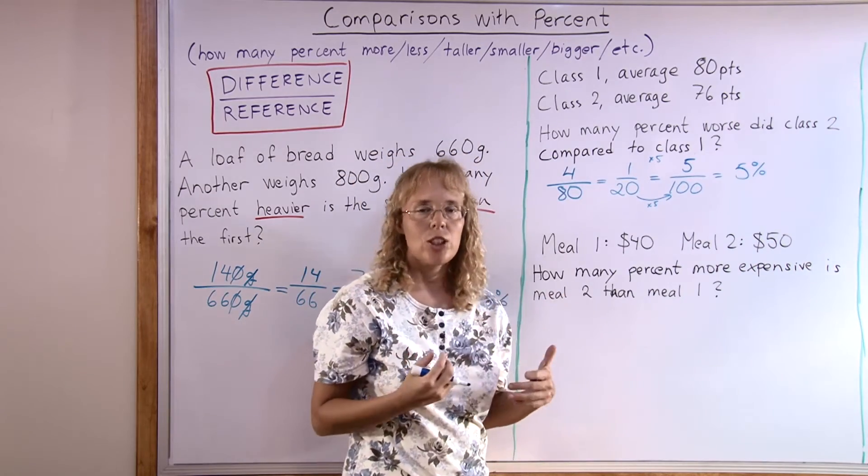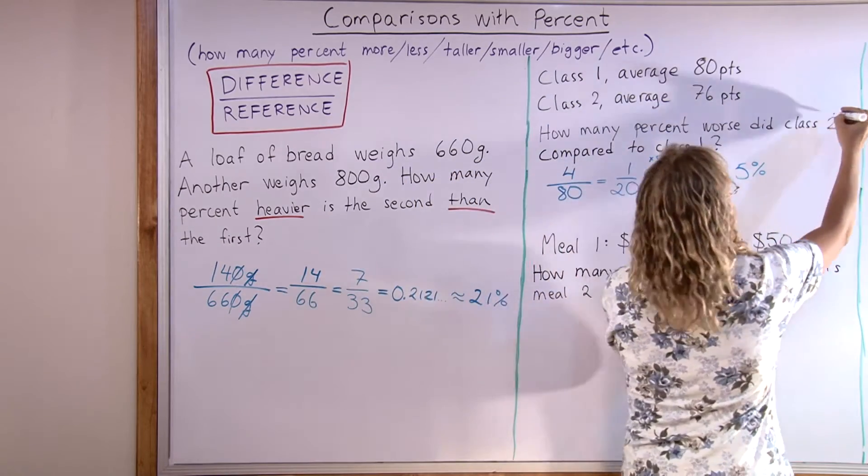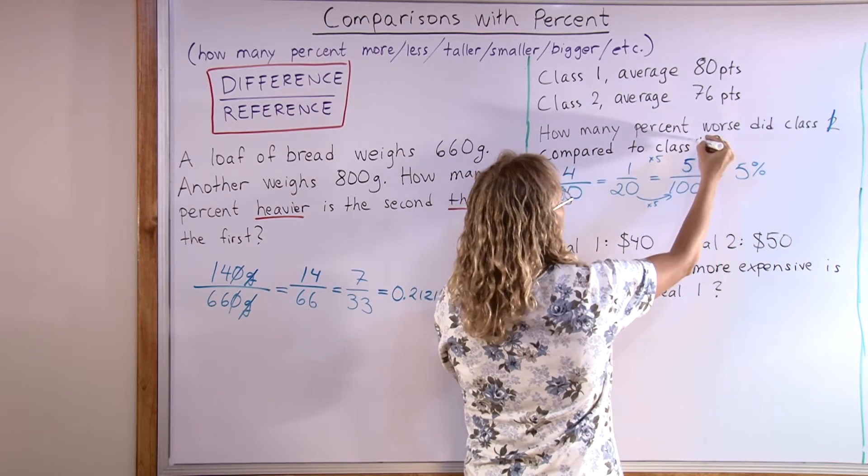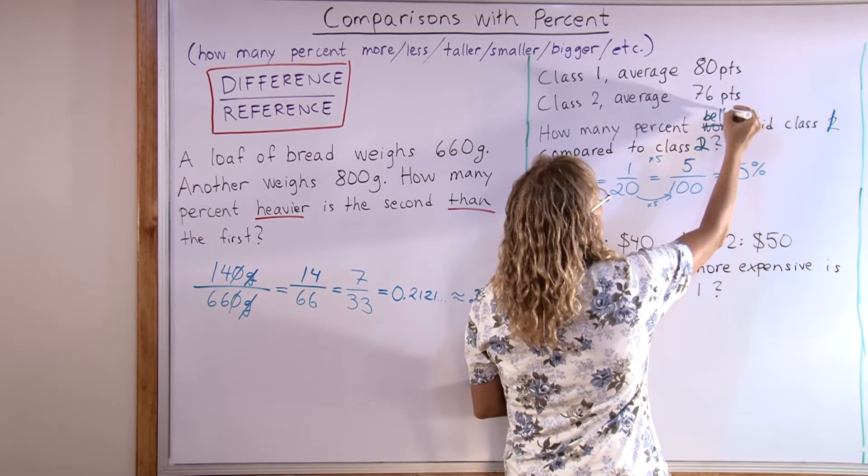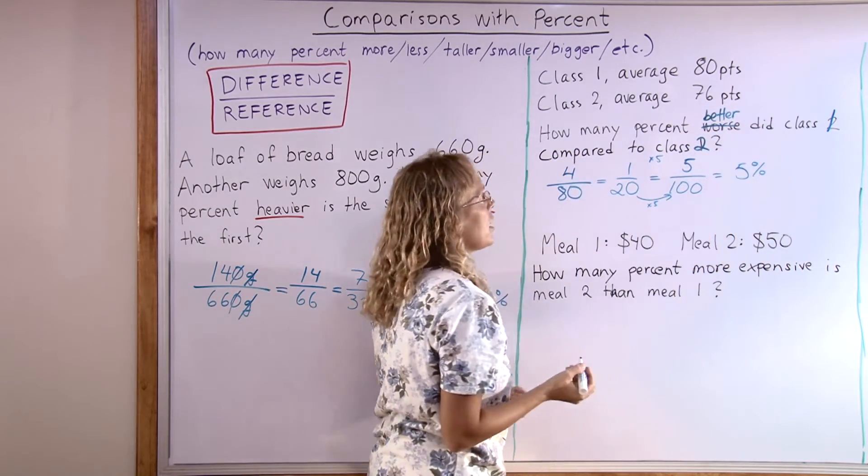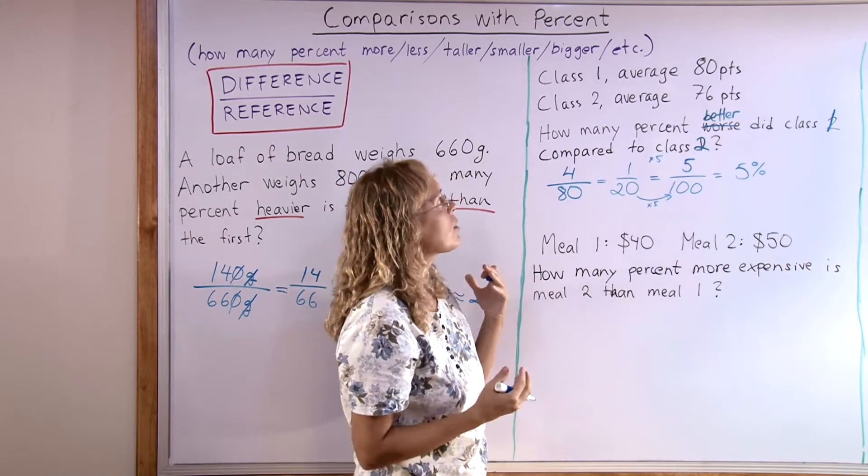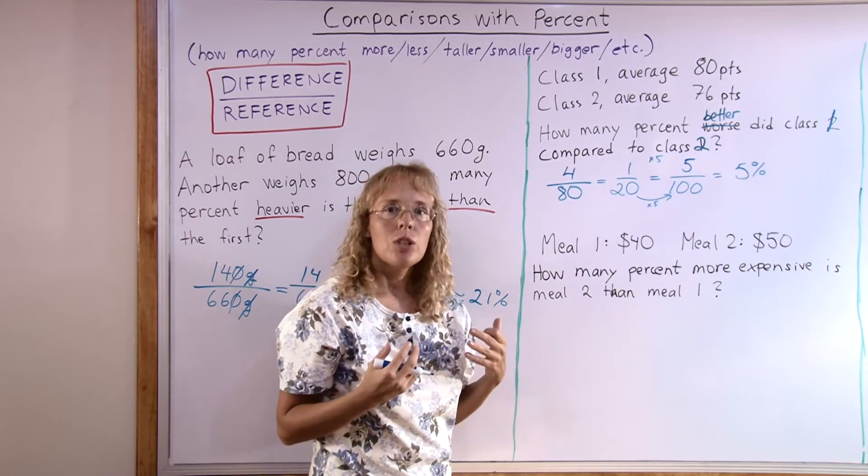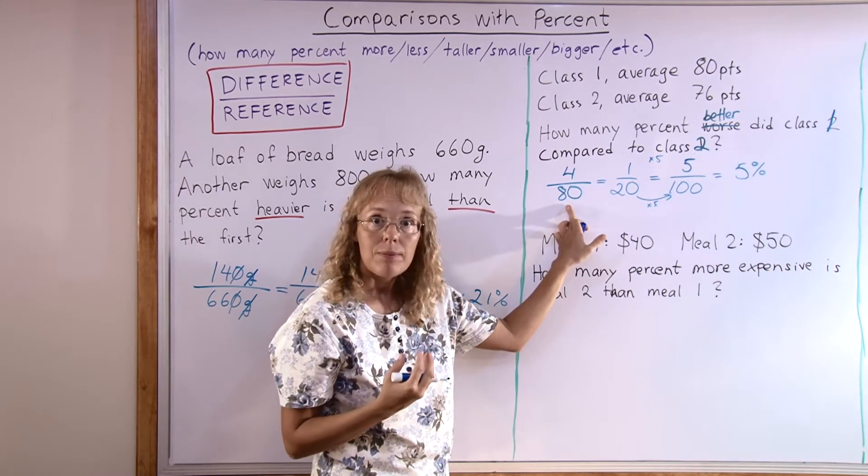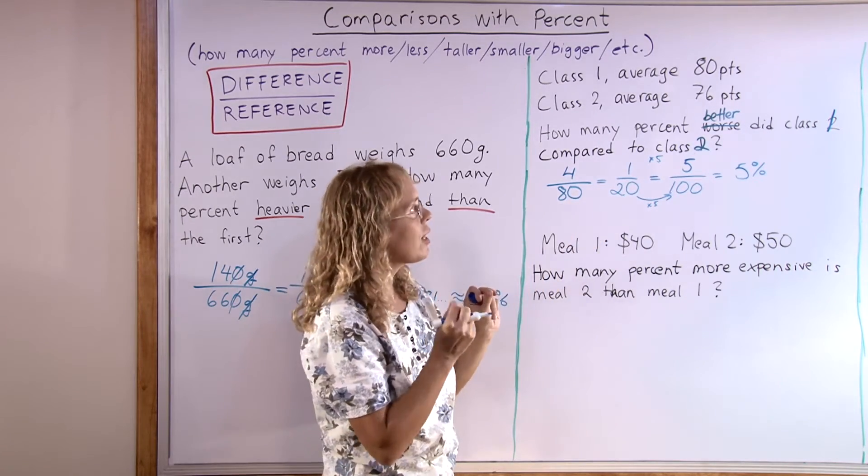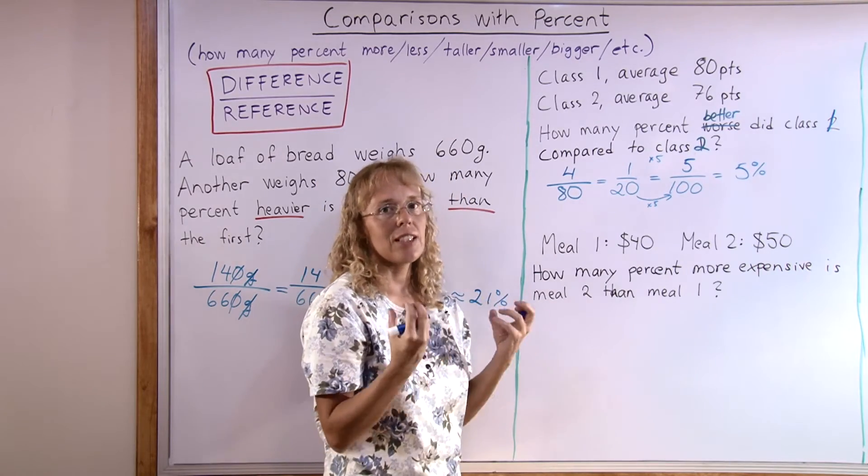Now if the question was the other way, if it switched class one and class two, you have to be careful of that. How many percent better did class one do than class two? Then all that changes is your reference number here. It will change to 76. So just very carefully look which one it is comparing to. What's your reference class?